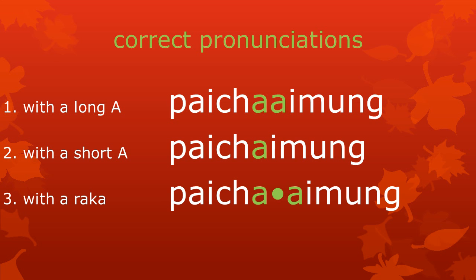When two of the same vowels meet in a word, three different pronunciations are possible. The first one is with a long vowel — in this case a long A, Baitaimung. The second pronunciation is with a short A, Baitaimung. And the third one is also with a long A, Baitaimung.